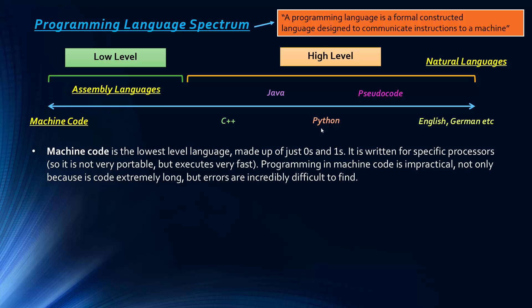Machine code is the lowest level language, made up of just zeros and ones. As we've looked at in the CPU video, it's written for specific processors because each processor has its own instruction set. So machine code written for one processor won't work on another — it's not very portable. But when written for a specific processor it executes very fast because it is directly executed.